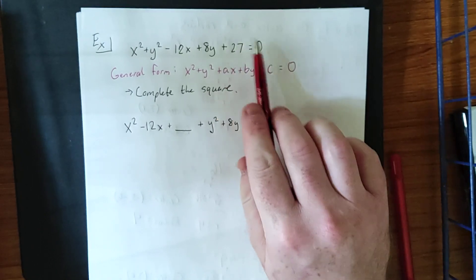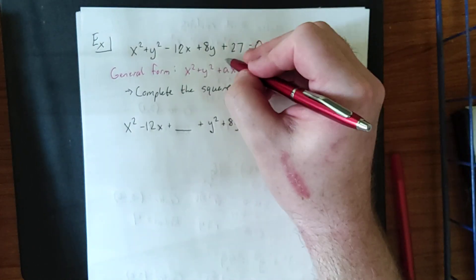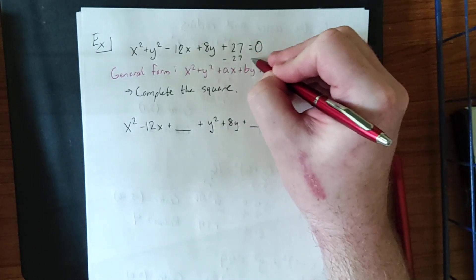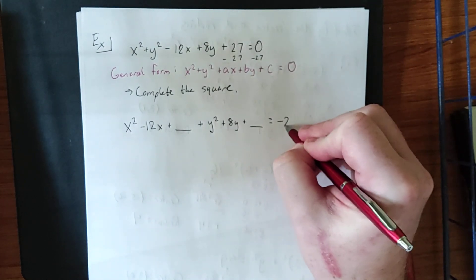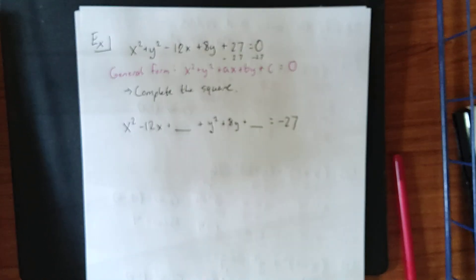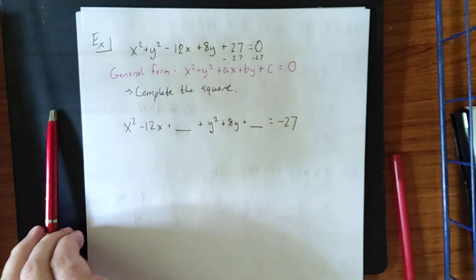We'll also put a little spot here for where we will be completing the square with the y variable. This plus 27, I'm going to move over to the left-hand side by saying let's subtract 27 from both sides. So it shows up on the right side of the equation as a minus 27.